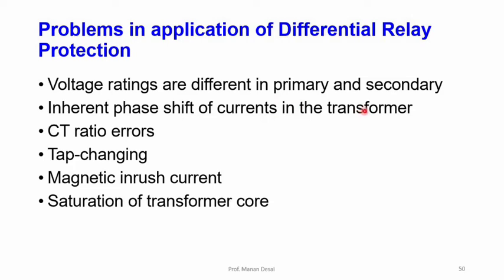CT ratio error is another concern. CTs have allowable ratio errors depending on their class, and the worst case occurs when the errors on primary and secondary sides are cumulative. In such cases, spill current flows through the operating coil, causing the relay to operate, particularly at high through-fault current. The biased or restraining winding of the relay can avoid unwanted tripping.